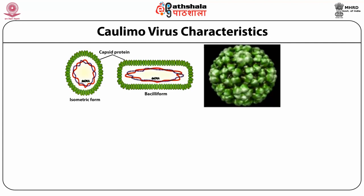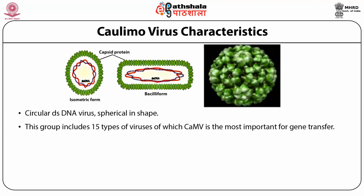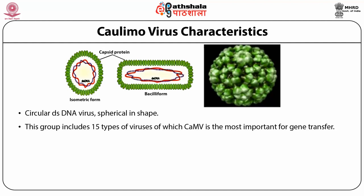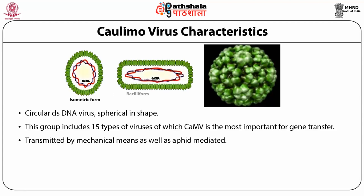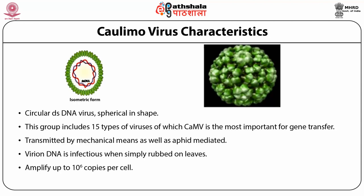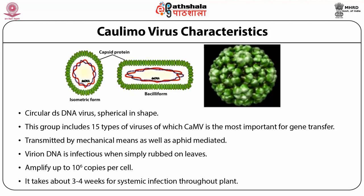The characteristics of caulimovirus: they contain circular double-stranded DNA and are spherical in shape. This group includes 15 types of viruses, of which cauliflower mosaic virus is the most important for gene transfer. They are transmitted by mechanical means as well as aphid-mediated transmission. Viral DNA is infectious when simply rubbed on leaves. Viral DNA amplifies to a large copy number, approximately 10 to the power of 6 copies per cell. It takes about 3 to 4 weeks for systemic infection throughout the plant.